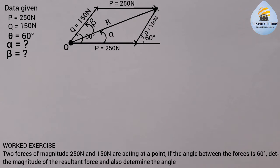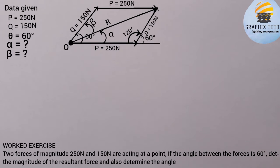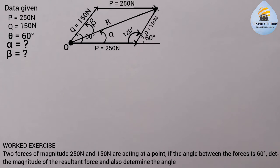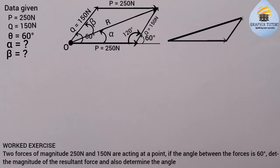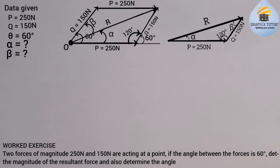Applying the sum of angles on a straight line, which equals 180 degrees: 180 minus 60 gives us the remaining angle of 120 degrees. So from the parallelogram we can extract this triangle shape, where alpha is one angle, beta is another, and the included angle between the two forces is 120 degrees. In this triangle, the sides are P and Q.